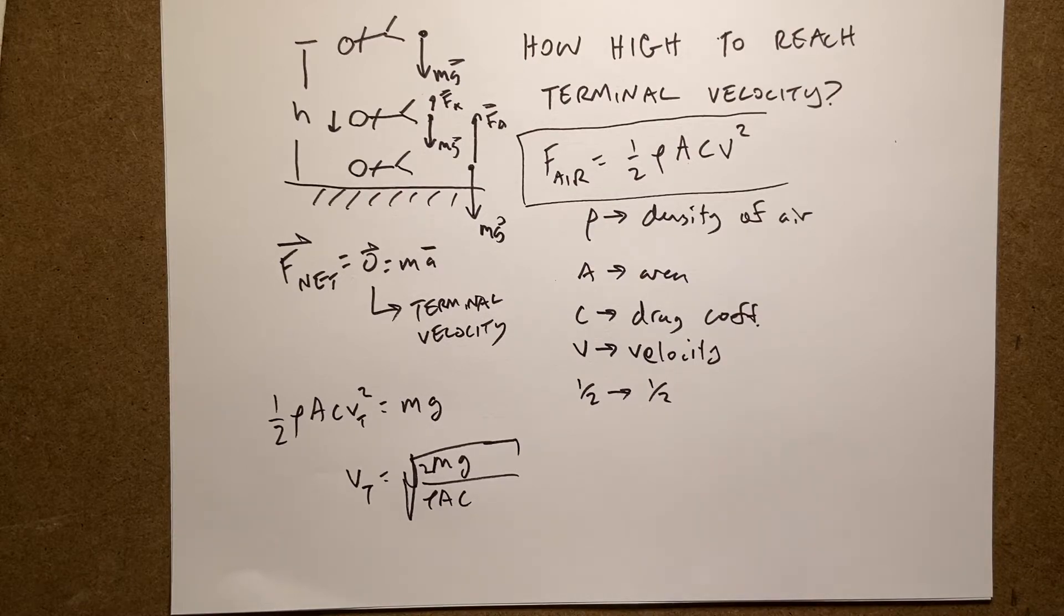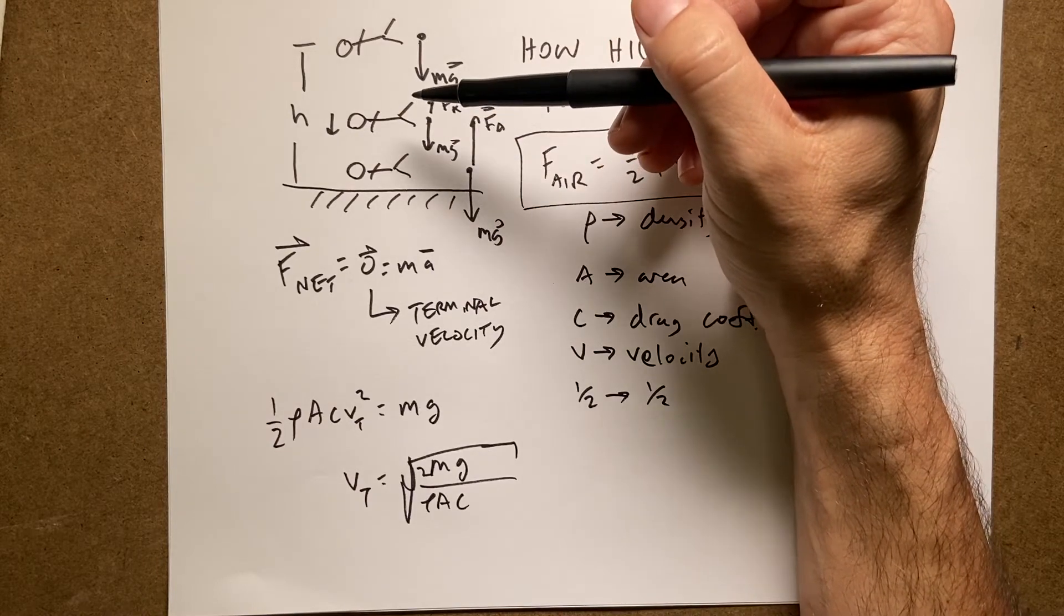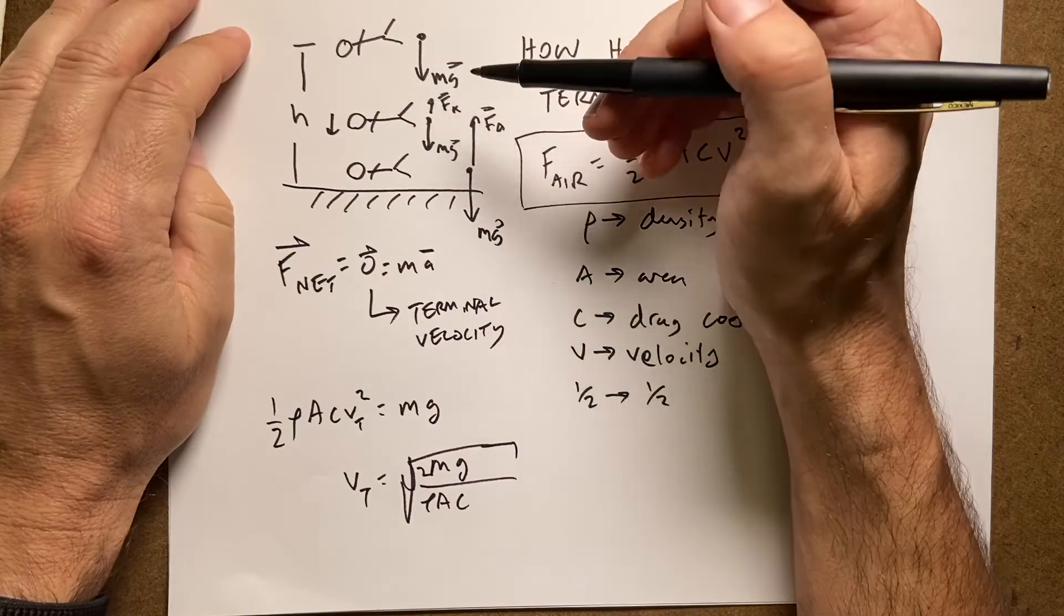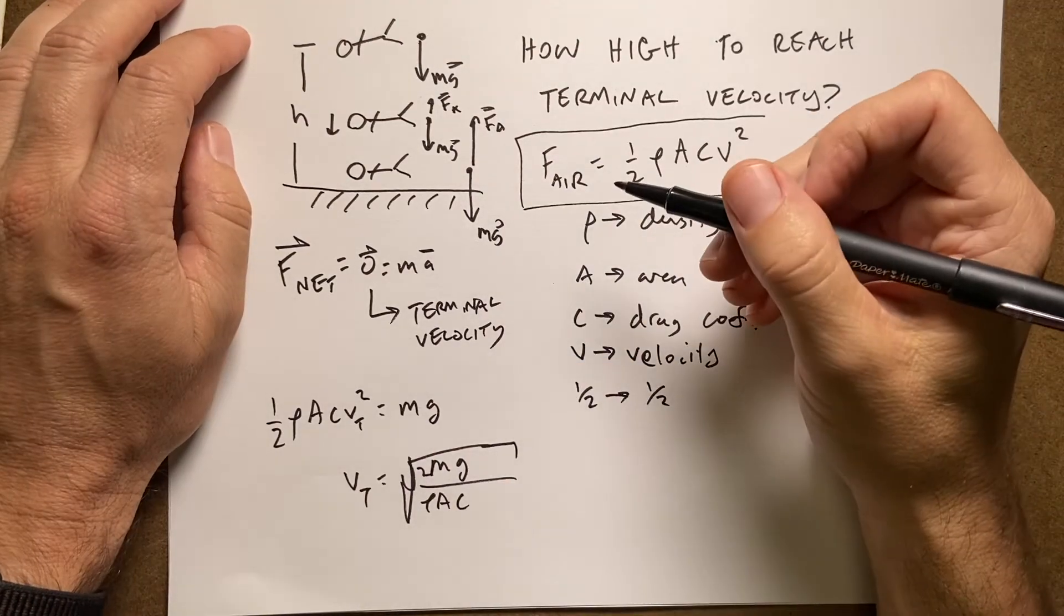So you can find that. But if I know the velocity, can I find out how high it has to fall to get to that? And the answer is not very easily. Because I can't use kinematic equations because the acceleration is not constant. So I'm going to have to build a numerical model for this.